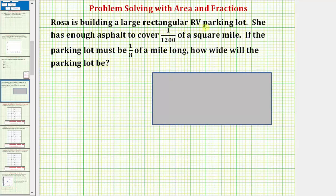Rosa is building a large rectangular RV parking lot. She has enough asphalt to cover 1/1200th of a square mile. Which means if this rectangle represents the parking lot, and she uses all the asphalt to create the parking lot, the area would be equal to 1/1200th of a square mile.